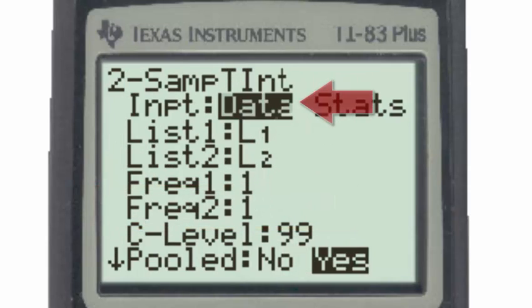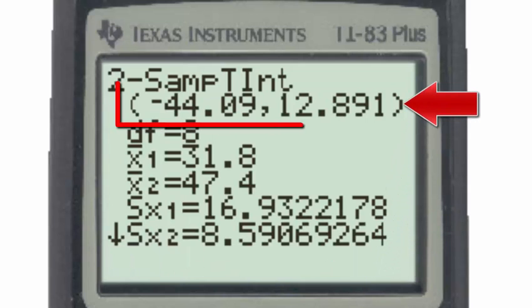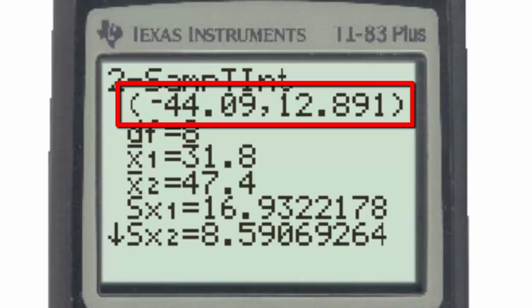Again our input is in the form of data, lists one and lists two, the frequency one. Our confidence level is 99 because the significance level in the hypothesis test was one percent. We will again decide to pool the data, assuming that the standard deviations are approximately equal, and calculate. The confidence interval estimate is given as being somewhere between negative 44 and positive 13.